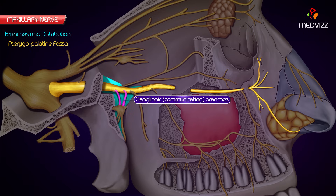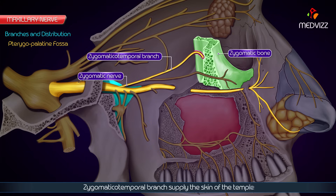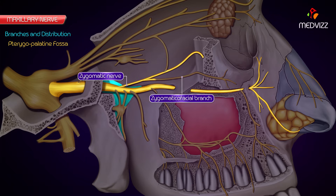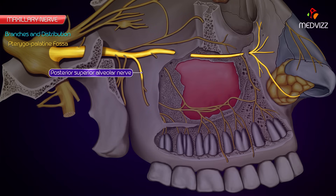Ganglionic or communicating branches, two in number, to the pterygopalatine ganglion. The zygomatic nerve enters the orbit and divides on the lateral wall of the orbit into a zygomaticotemporal branch, which passes through a foramen in the zygomatic bone to supply the skin of the temple, and a zygomaticofacial branch, which passes through a foramen in the zygomatic bone to supply the skin of the face.